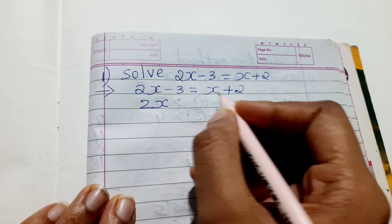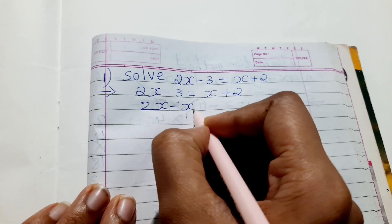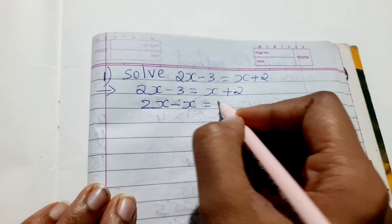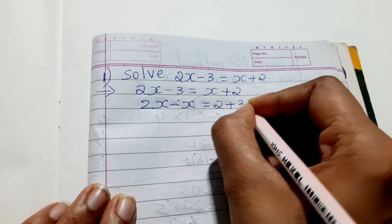We are separating now. 2x and this x, bringing it here, so it will become minus x, equals 2. This minus 3, when it comes here, it will become plus 3.